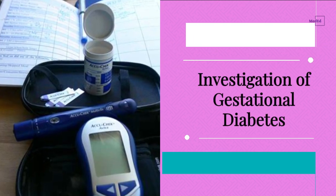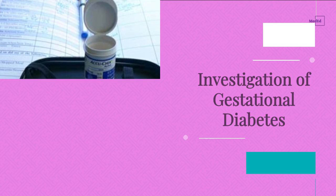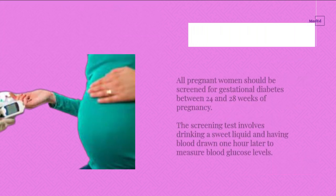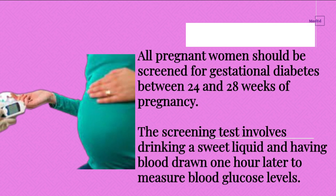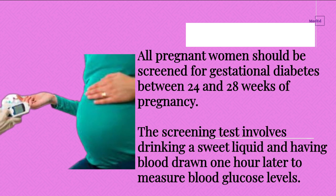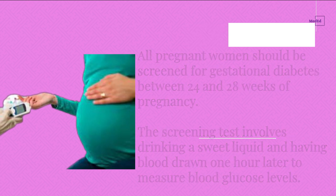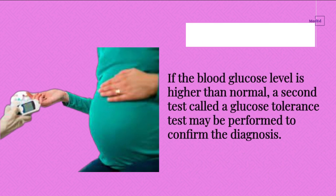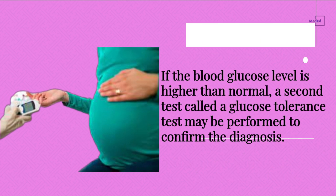Investigation of Gestational Diabetes. All pregnant women should be screened for gestational diabetes between 24 and 28 weeks of pregnancy. The screening test involves drinking a sweet liquid and having blood drawn one hour later to measure blood glucose levels. If the blood glucose level is higher than normal, a second test called a glucose tolerance test may be performed to confirm the diagnosis.